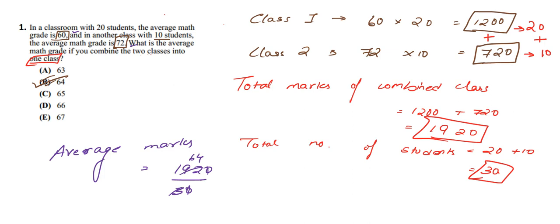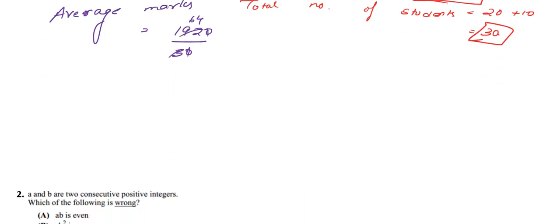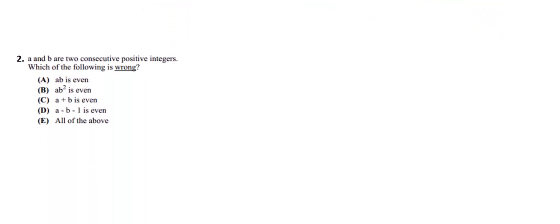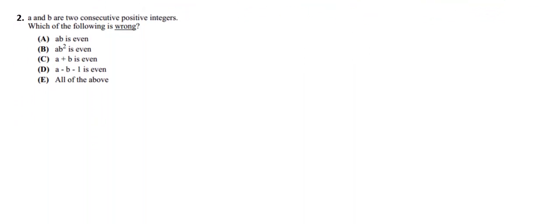This question is over. Now let's move on to question number 2. Here, A and B are two consecutive positive integers — both consecutive, positive, and integers. We need to find which of the following five options is wrong, meaning four of them are correct.